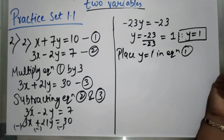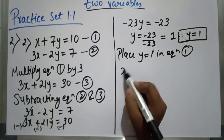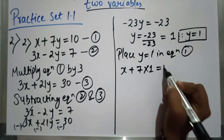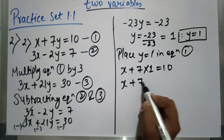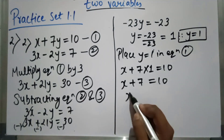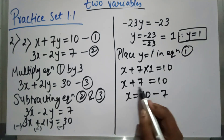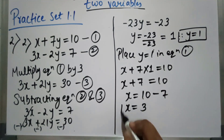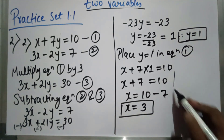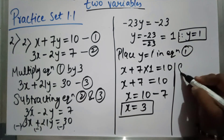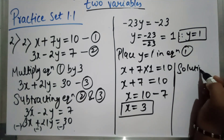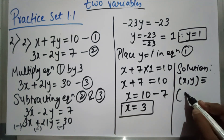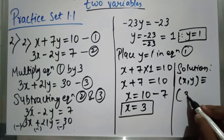We put y equal to 1 in equation 1: x plus 7 into 1 equal to 10, so x plus 7 equal to 10, therefore x equal to 10 minus 7, which is 3. So the solution is: x, y equal to 3, 1.